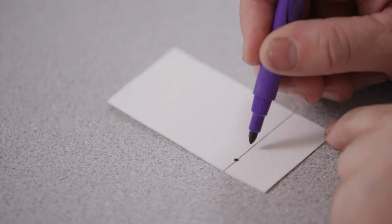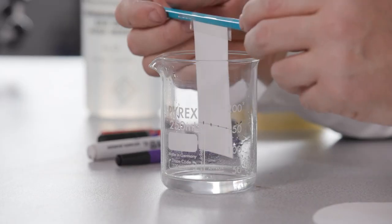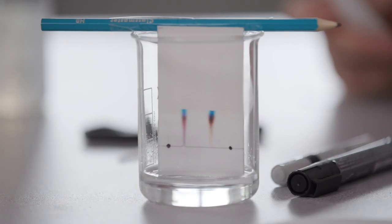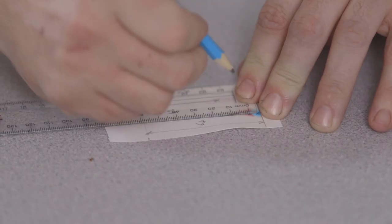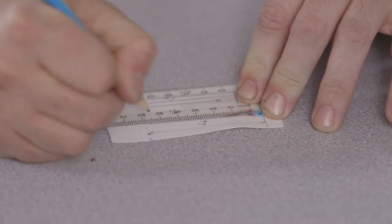So what we've done today in this core practical is to prepare the chromatography paper, to run the chromatogram accurately and precisely, and then to calculate RF values.